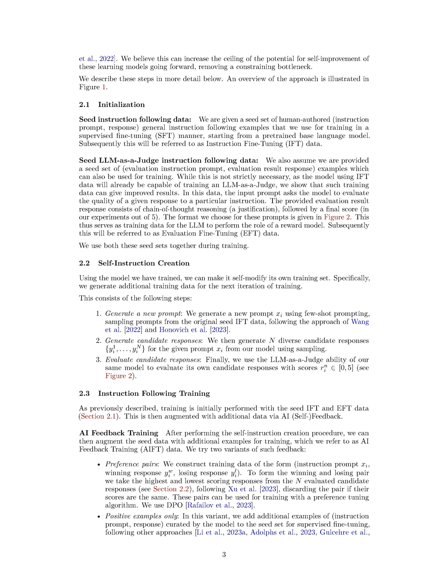The authors introduce self-rewarding language models, SRLMs, that possess the abilities of instruction following and generating and evaluating new instruction following examples. These models are trained using an iterative framework called Iterative Direct Preference Optimization, DPO, where the models generate candidate responses and assign rewards to them. The generated data is used to build a preference dataset, and the next iteration of the model is trained using DPO. The authors find that SRLMs not only improve instruction following performance but also improve the quality of the reward model itself, allowing for potential superior performance compared to models trained solely on human-authored data.